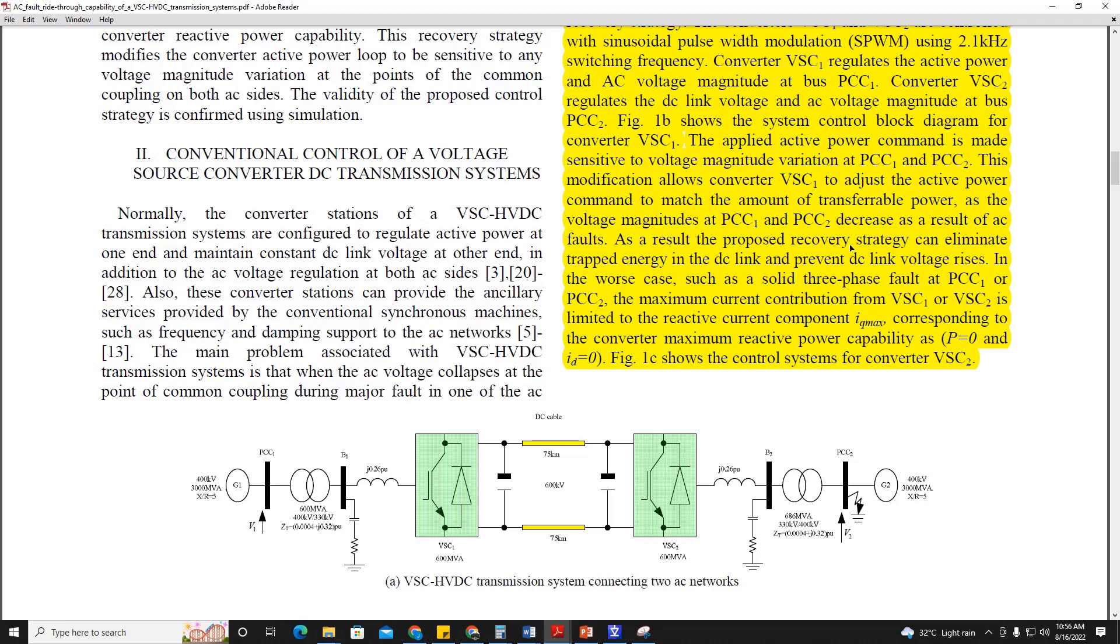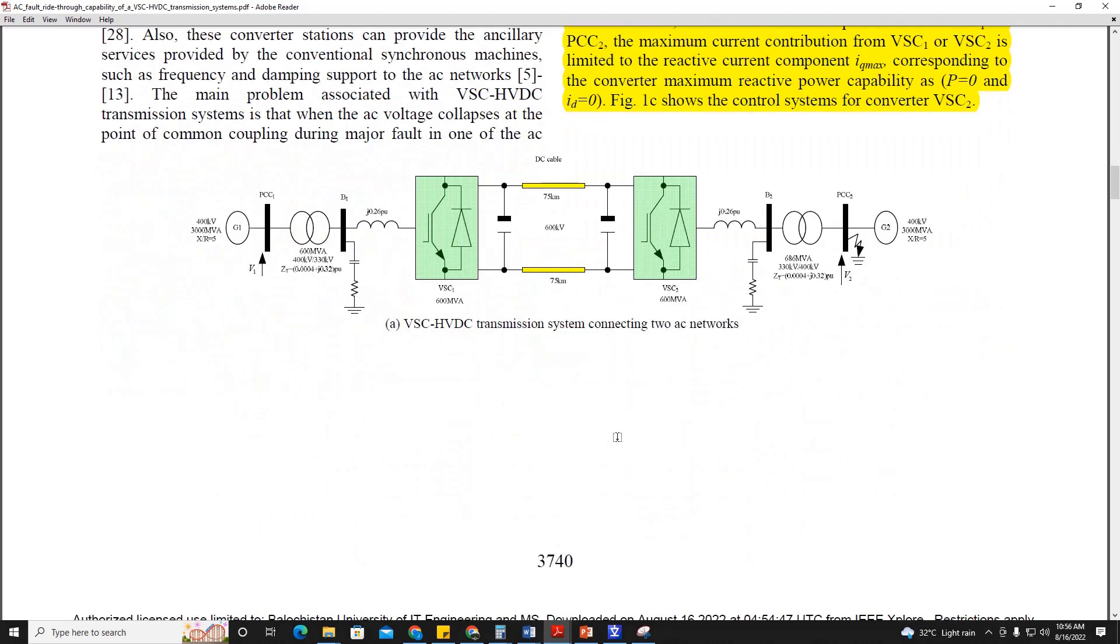As a result, the proposed recovery strategy can eliminate trapped energy in the DC link and prevent DC link overvoltage. In the worst cases such as solid three-phase fault at PCC1 or PCC2, the maximum current contribution from VSC1 or VSC2 is limited to reactive current component Iq max corresponding to converter maximum reactive power capability, as P equals zero and I equals zero. Figure 1c shows the control systems for converter VSC2.